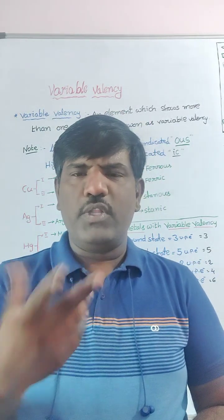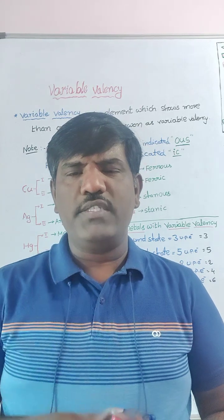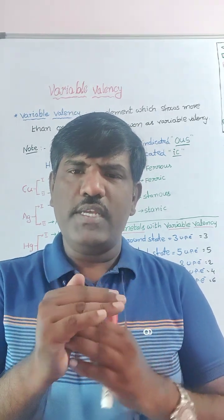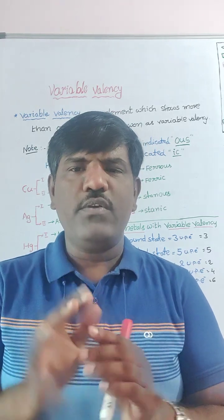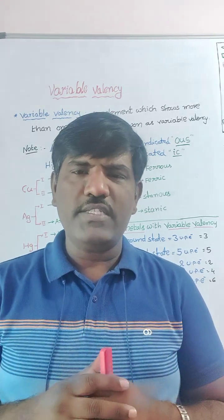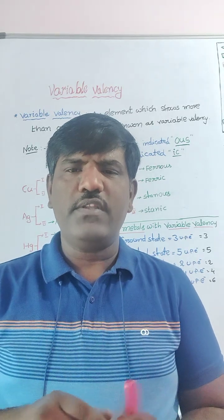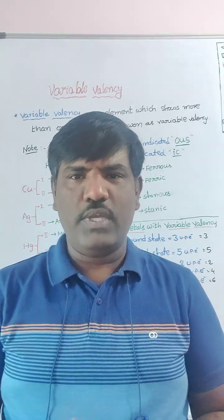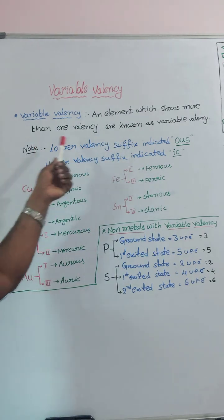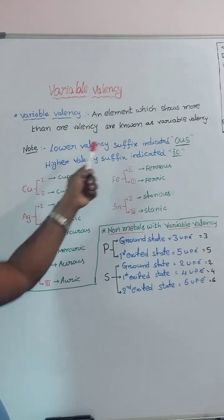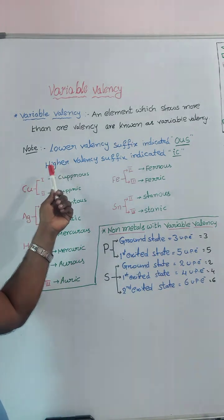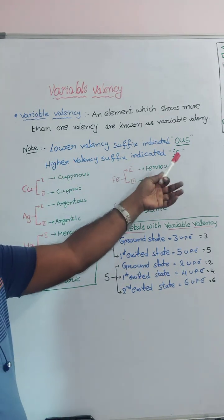When an element shows more than one valency — for example, two different valencies — the lower valency suffix is indicated with OUS, and the higher valency suffix is indicated with IC.